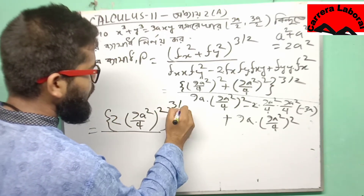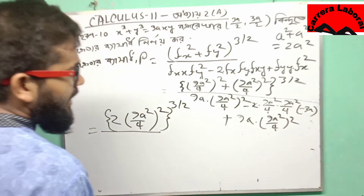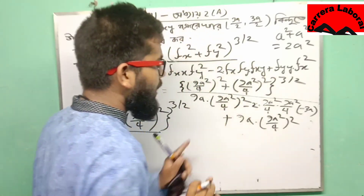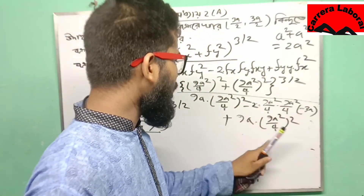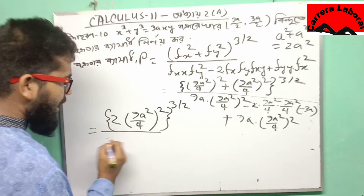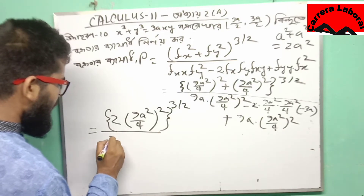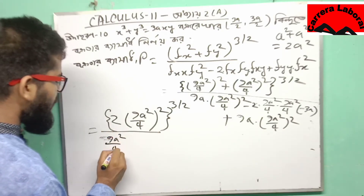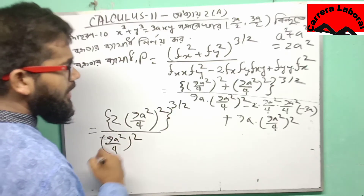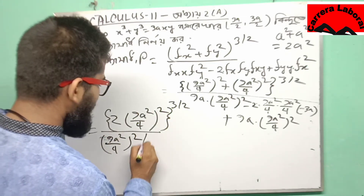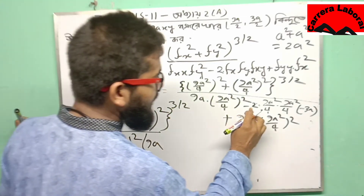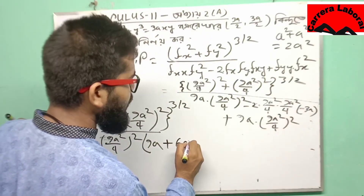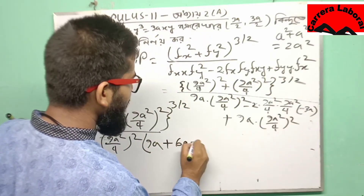Bracket d e by two. We have 9 squared divided 4, e 8 squared. This is common — 9 squared divided by 4 squared is common. This is minus 6a plus 9a.